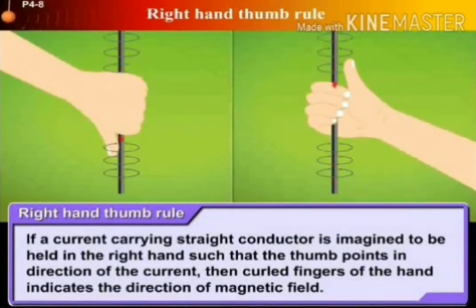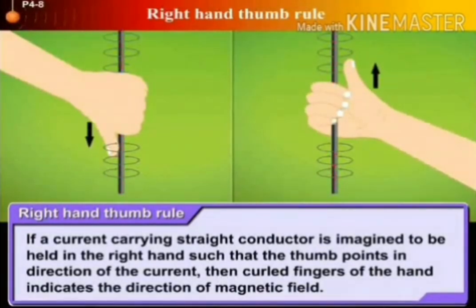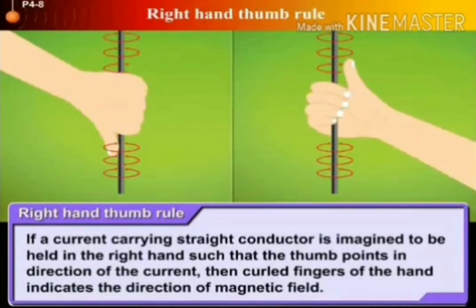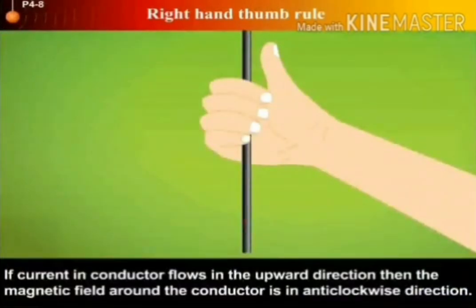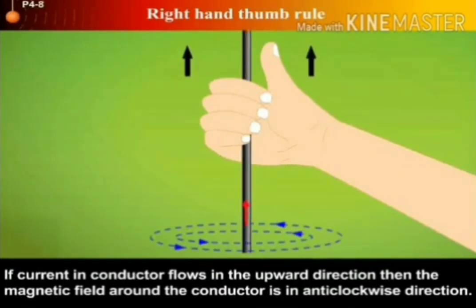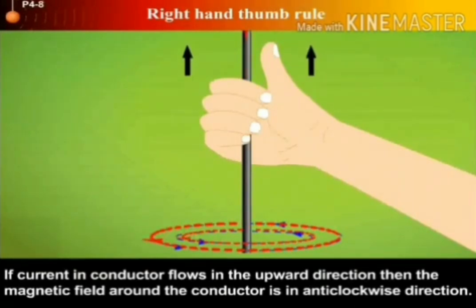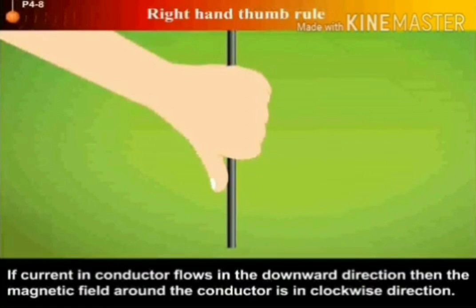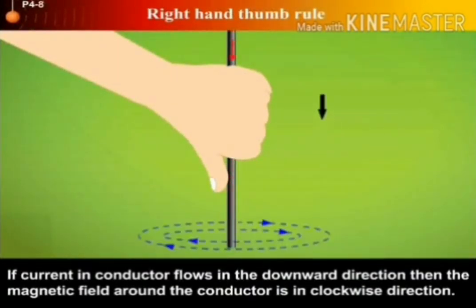What is the speciality of this magnetic field? Hold the conductor using the right hand in such a way that the thumb is in the direction of the current, i.e. from positive to negative. Then, the other fingers of the right hand encircling the conductor indicate the magnetic field lines. That is, if current in the conductor flows in a downward direction, then the magnetic field around the conductor is in anti-clockwise direction, and vice versa.